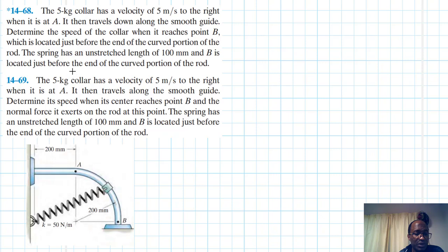Both problems are coming from the engineering mechanics dynamics 14th edition by RC Hibbeler. So let's draw the free body diagram. We do have the weight acting through the center of gravity, and then we do have the spring force, whose position keeps on changing. Let me assume that the normal force... sorry, the spring force is in this direction.